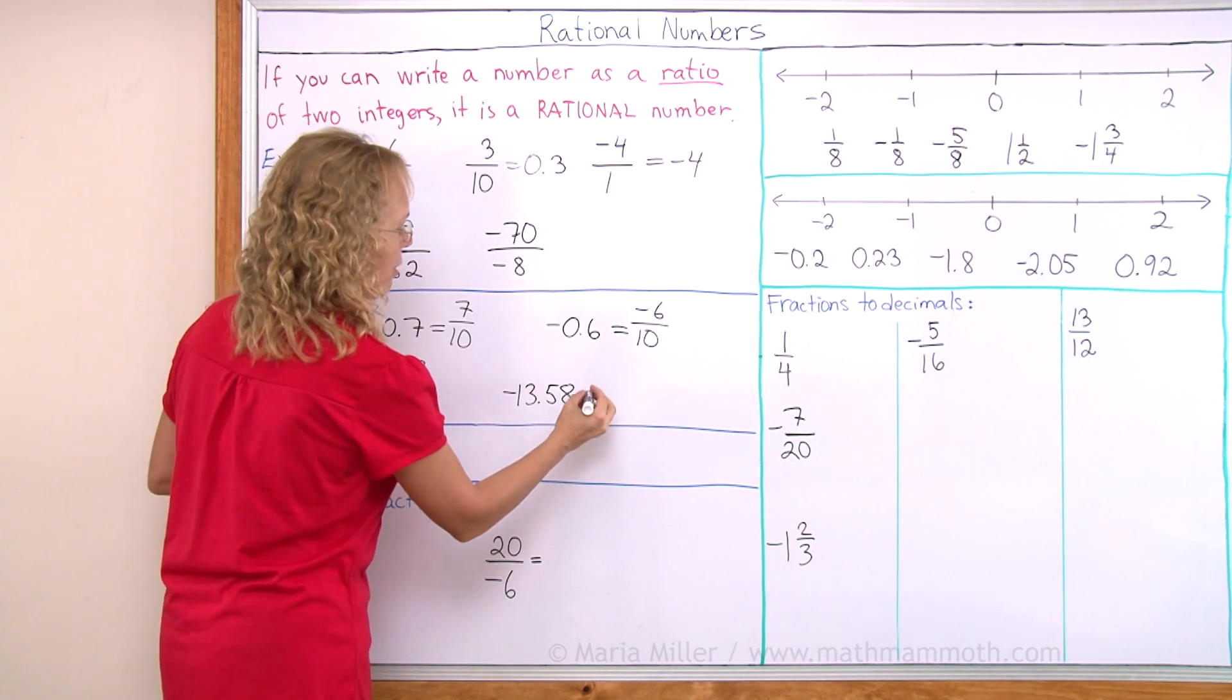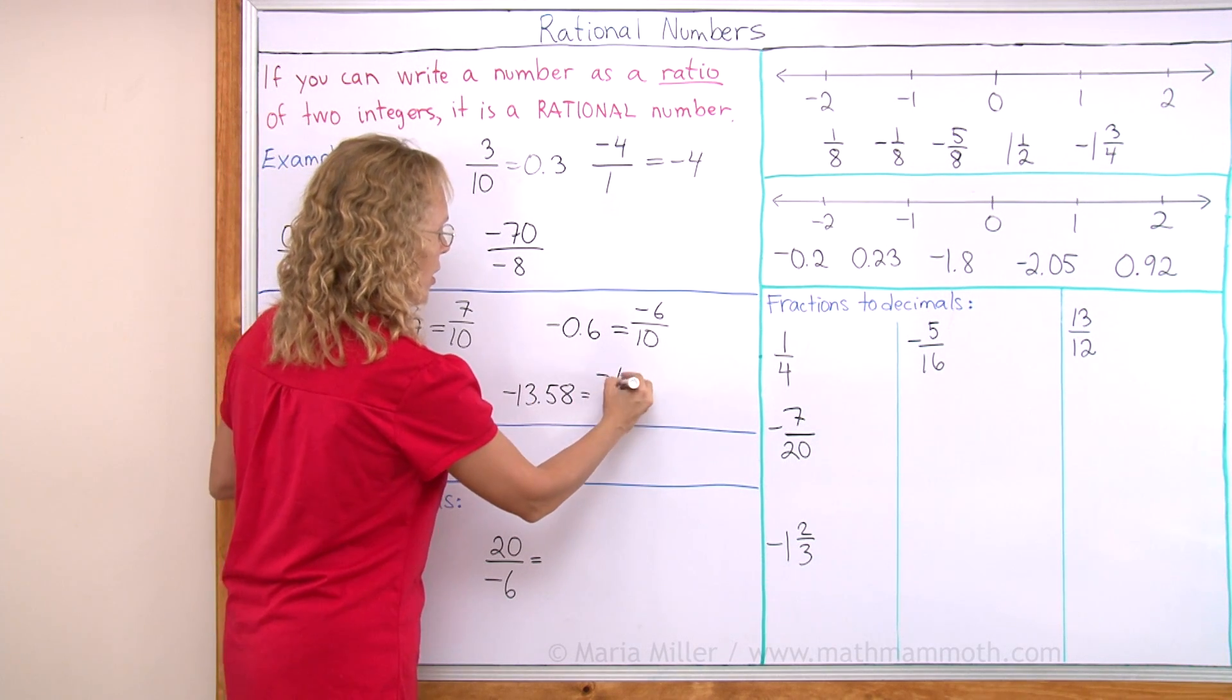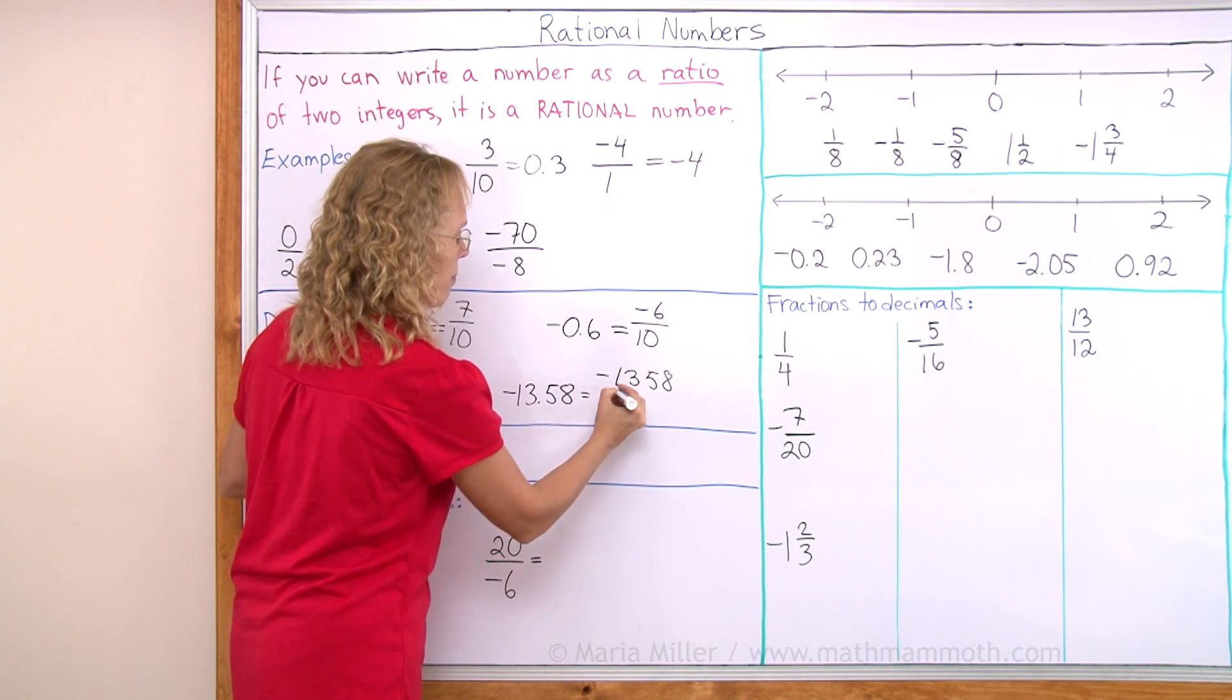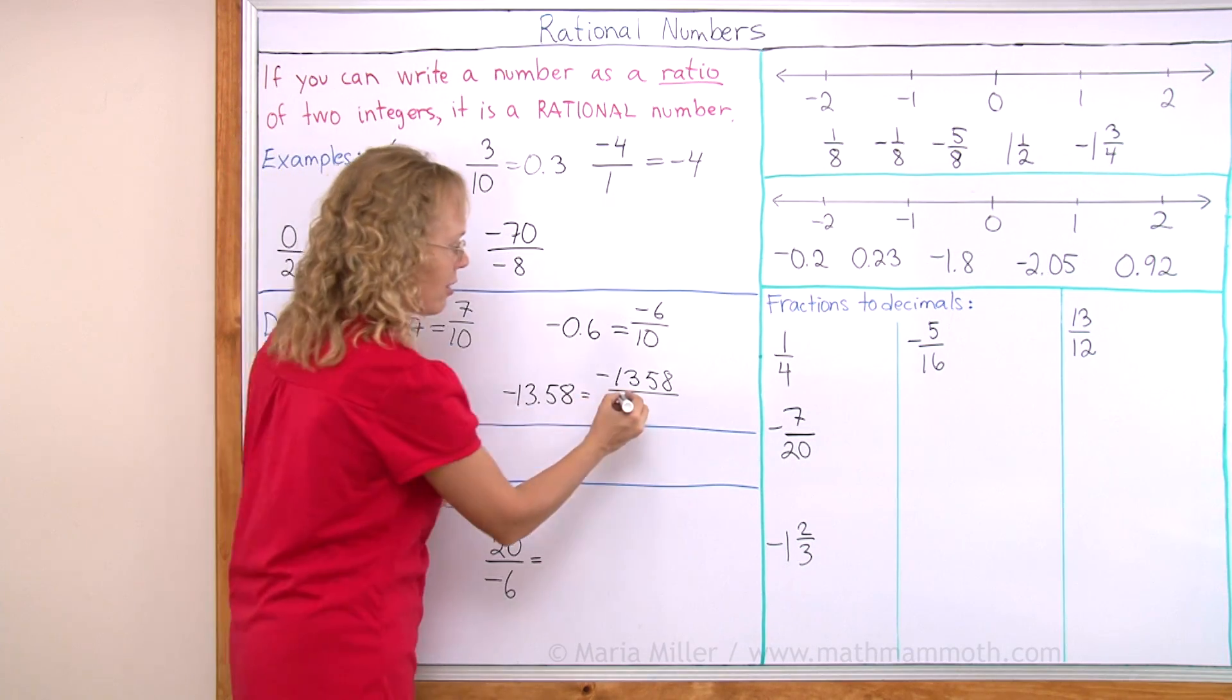Or here, the only difference is that it has a negative here, so I'll put the negative up here, and then I just copy all those digits, and there's two decimal digits, so that means the denominator would be 100.